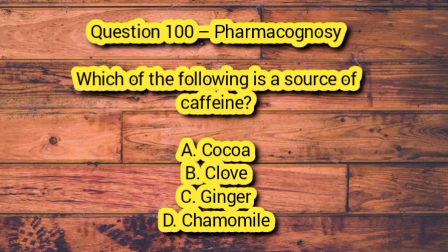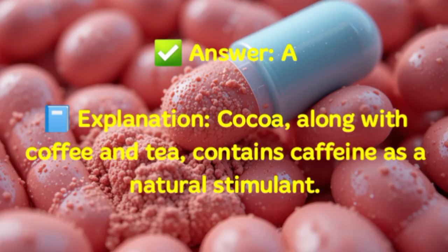Question 100 – Pharmacognosy. Which of the following is a source of caffeine? A. Cocoa. B. Clove. C. Ginger. D. Chamomile. Answer: A. Explanation: Cocoa, along with coffee and tea, contains caffeine as a natural stimulant.